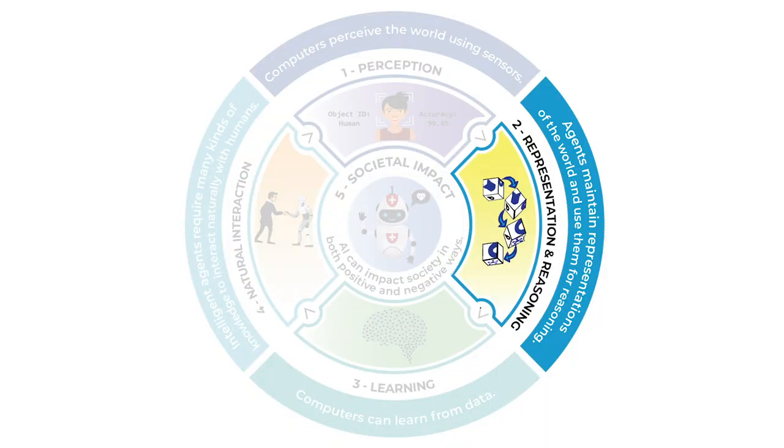Number two, representation and reasoning. Representation is when a computer builds its own world so that it can understand — just like a Google map. That's an example of a representation of how the computer perceives the world. Then it can apply reasoning to that representation — for example, to take you on the correct bike path or to route you via Uber.